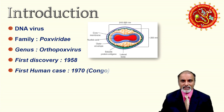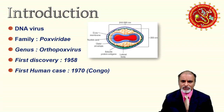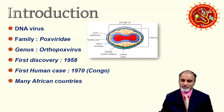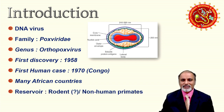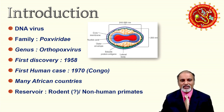The first human case was reported in 1970 in the Congo. After that there have been many reports from the majority of West African countries. About 40 years later, new cases emerged — in 2017 some cases were reported. The reservoir is still a question mark; it may be African rodents, non-human primates like monkeys, and squirrels. These are all considered possible reservoirs.